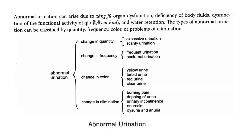In abnormal urination, changes in quantity include excessive urination or scant urination. Changes in frequency include frequent urination or nocturia. Changes in color include yellow urine, turbid urine, red urine, or clear urine. Changes in elimination include burning pain, dripping of urine, urinary incontinence, enuresis, or dysuria and anuria.